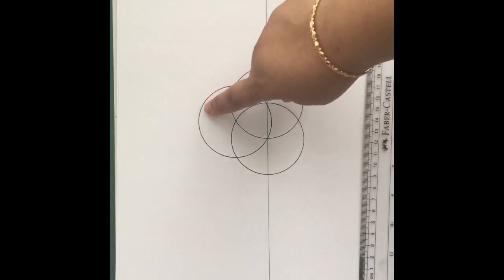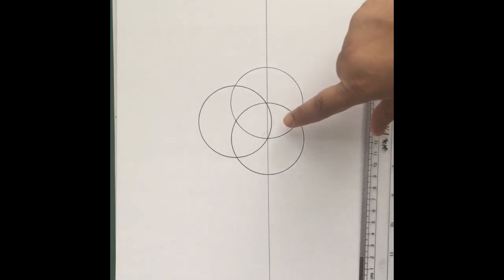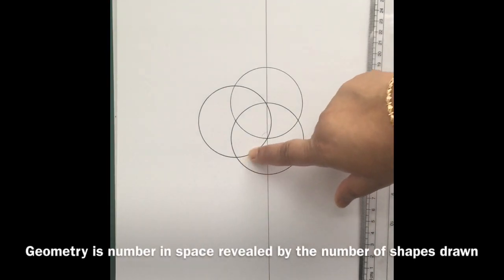You can see that where the three circles overlap in the center, you could sit a nice equilateral triangle right in the middle.